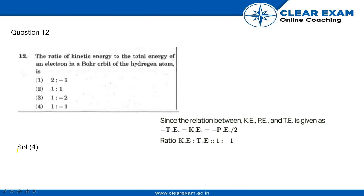2018 SET HH, question number 12: the ratio of kinetic energy to the total energy of an electron in a Bohr orbit of hydrogen atom. The relation between kinetic energy, potential energy, and total energy is given by: